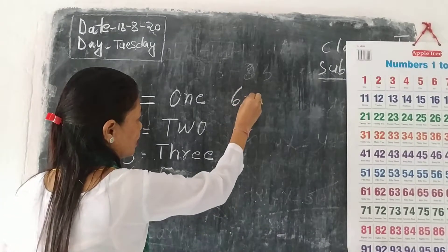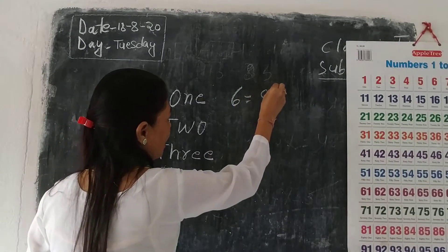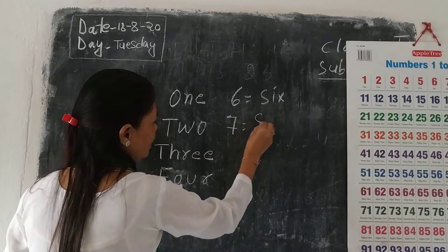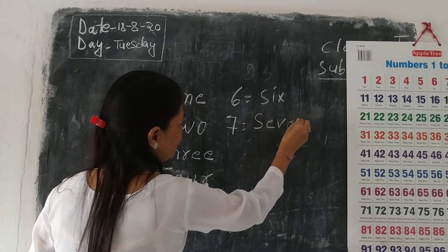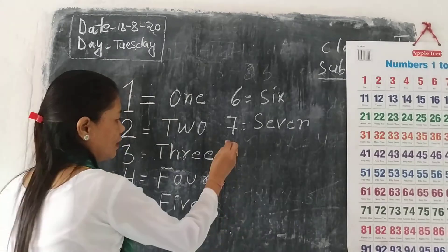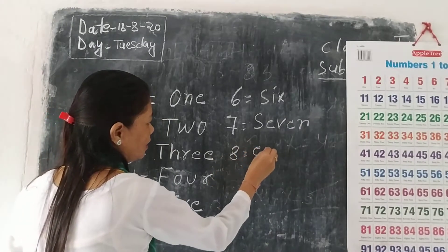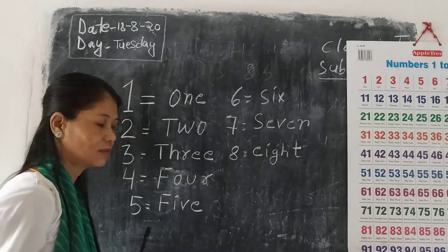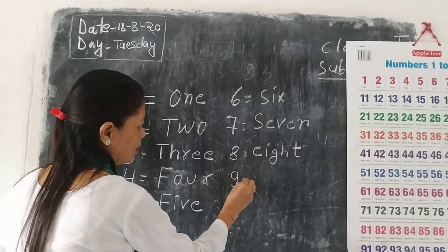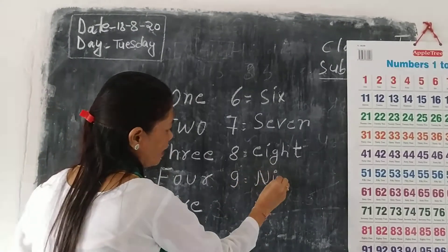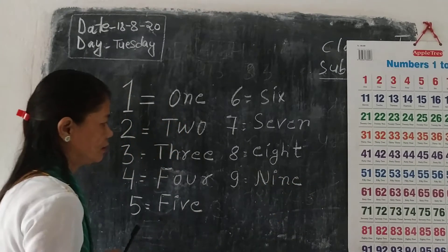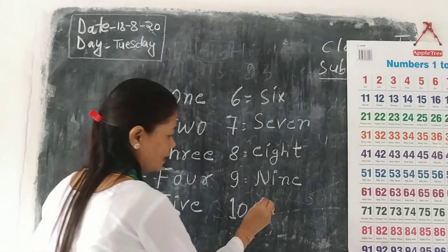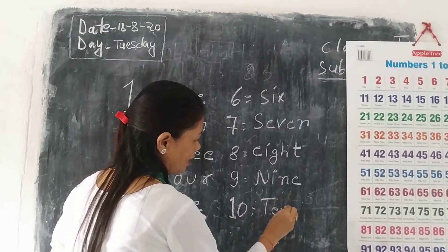And 6 — S-I-X. 6. And 7 — S-E-V-E-N. 7. And 8 — E-I-G-H-T. 8. And 9. And 10 — what is this? 10 is T-E-N. 10.